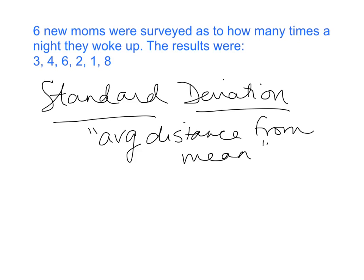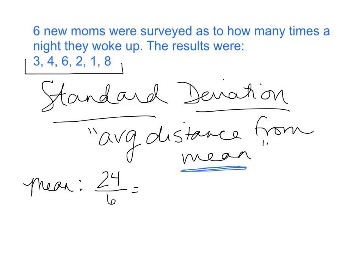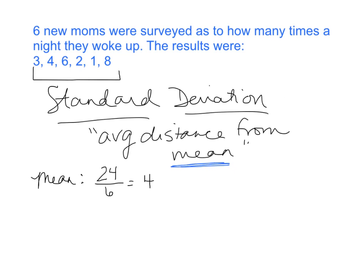I'm going to show you how to calculate it. We've got six numbers here, and the first step is to find the mean. I add those six numbers together and get 24. There are six of them, so I divide by six and find that my mean — the average number of times moms are getting up — is four.